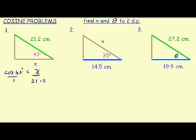Put 1 under the cosine 41, cross multiply. 21.2 times cosine 41 is equal to x, or x is equal to 21.2 cosine 41.